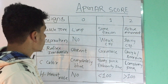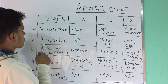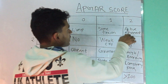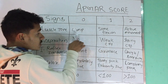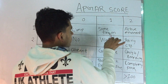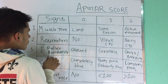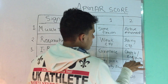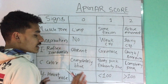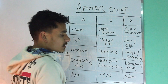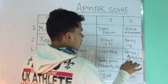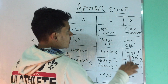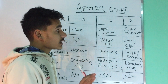To summarize — remember 'I am RICH': Muscle Tone — limp is zero, some flexion is one, active movement is two. Respiration — no respiration is zero, weak cry is one, strong cry is two. Reflex Irritability — absent is zero, grimace is one, cough or sneezing is two. Color — completely blue is zero, body pink and extremities blue is one, completely pink is two. Heart Rate — absent is zero, less than 100 is one, more than 100 is two.